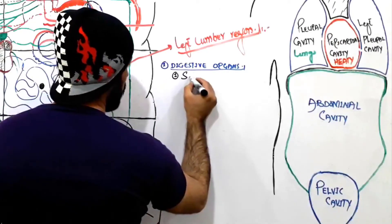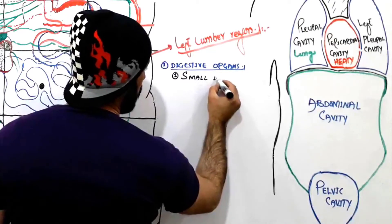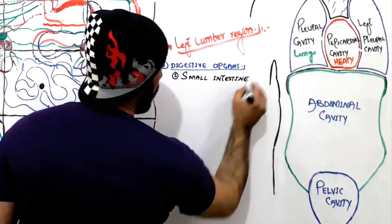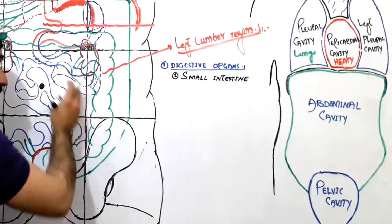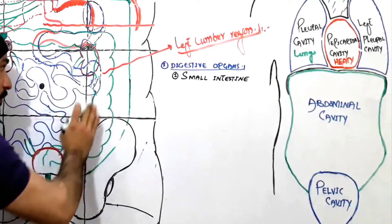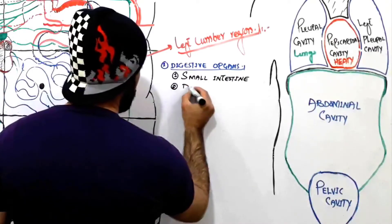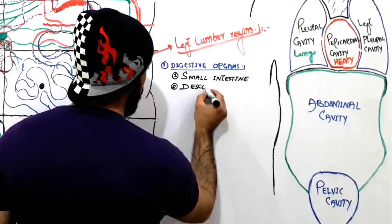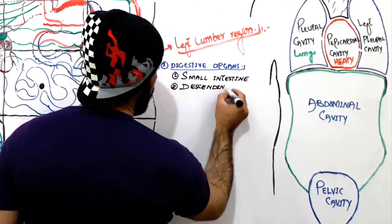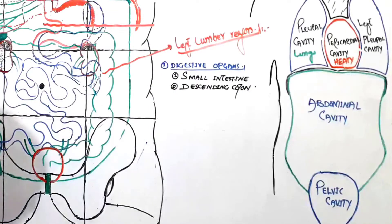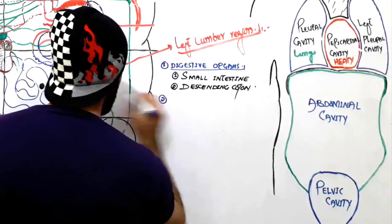Note that not all parts of the small intestine are here — only some parts shift towards the left lumbar region. Then we have the descending colon, which is found in the left lumbar region and plays its role in the digestion of food. These are the digestive organs.